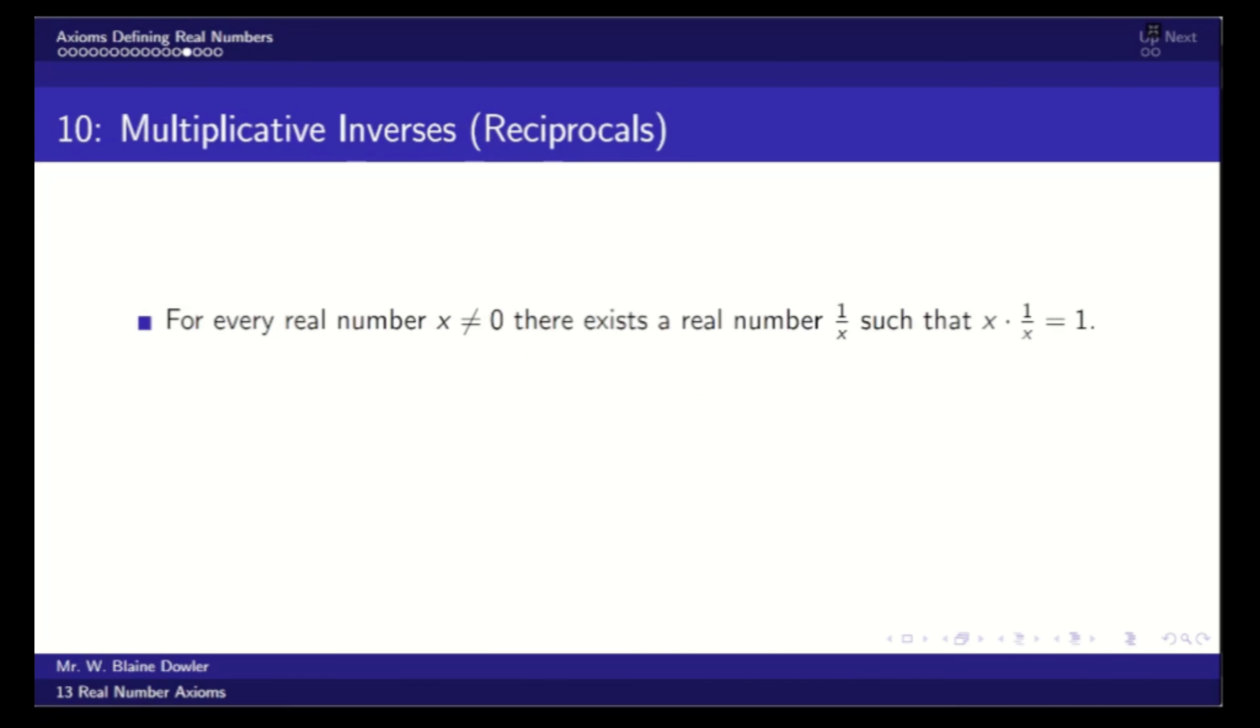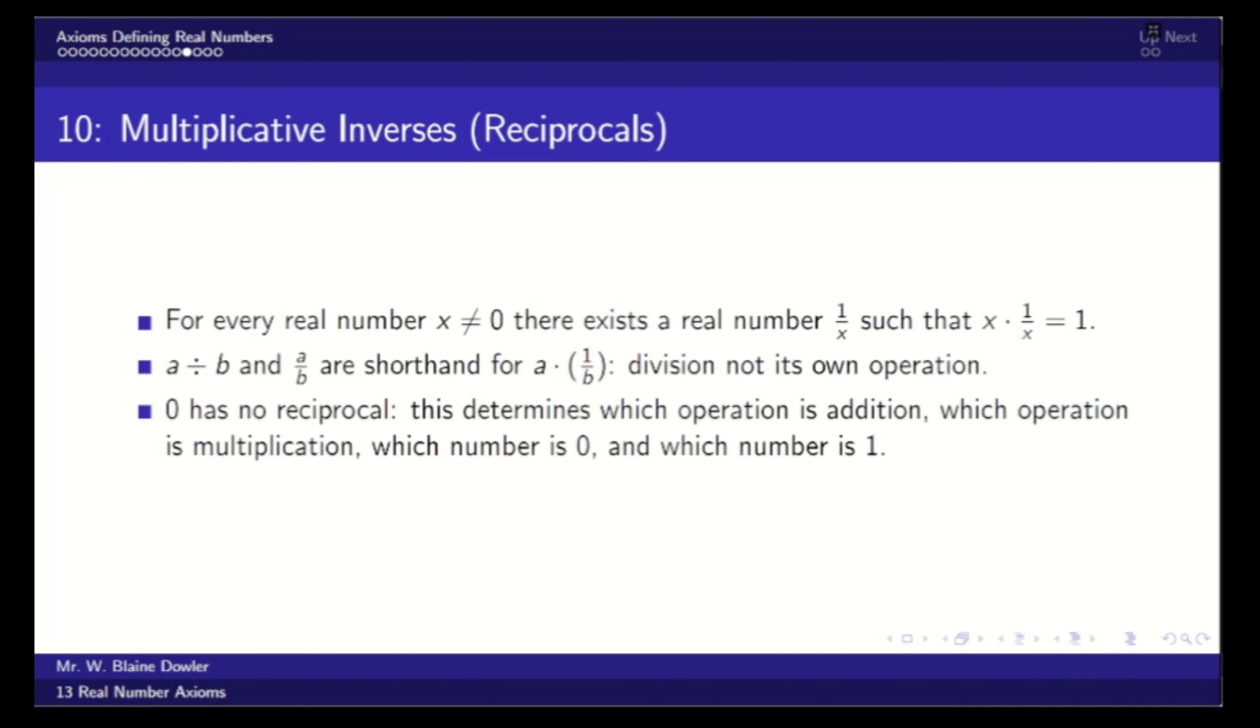Axiom 10 says that for every real number except 0, there exists a reciprocal, so that when you multiply the two together, you get 1. So a divided by b or a over b are shorthand for a times the reciprocal of b. Similarly, division is not its own operation. But most importantly, 0 has no reciprocal. This is how we know which operation is addition and which is multiplication, as well as which identity is 0 and which identity is 1.